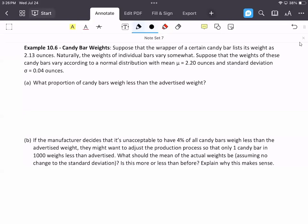Another example, example 10.6 talks about candy bar weights. Suppose that the wrapper of a certain candy bar lists its weight as 2.13 ounces. Naturally, the weights of individual bars vary somewhat. Machines are good, but let's be honest, they're going to give a slightly different amount of chocolate or whatever the filling is every time. Now suppose that the weights of these bars vary according to a normal distribution, so we're told that it's normal, with a mean of 2.2 and a standard deviation of 0.04 ounces. So I know that this can be modeled by the normal distribution, mean of 2.2, standard deviation of 0.04.